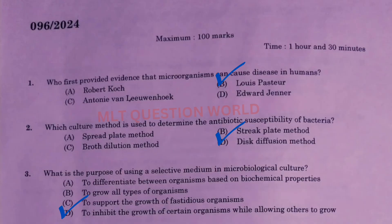Question number 1: Who first provided evidence that microorganisms can cause disease in humans? The right answer is option B, Louis Pasteur. Second question: Which culture method is used to determine the antibiotic susceptibility of bacteria? The right answer is option D, disc diffusion method.